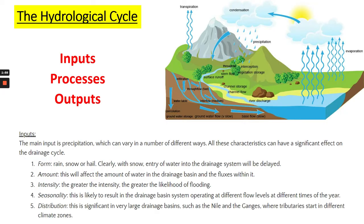The intensity of the rainfall can affect it too because it can increase the likelihood of flooding. Seasonality also has an impact — different seasons in different nations like the UK can affect the drainage basin system and how much water is being input into it. And finally, the distribution of it. Where the rainfall falls has a large impact on the drainage basin itself. For example, the River Nile and the River Ganges have different tributaries that start in different climate zones, which affects where the rivers form.